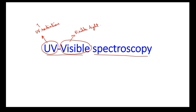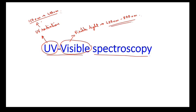UV radiations are basically in the region of 160 nanometers to 400 nanometers wavelength range, whereas visible light radiation is in the range of 400 nanometers to 800 nanometers. And as you all know, visible light can be broken down into VIBGYOR components.